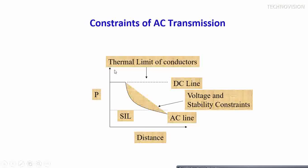There are thermal limits of conductors — another limitation. Whenever we transmit power through a conductor, it starts heating due to surrounding temperature and the conductor's temperature limit. DC is independent of distance — for any distance you can use DC transmission. You can load your line up to the Surge Impedance Loading (SIL), which is the maximum loading up to the thermal limit; beyond that the conductor will snap.